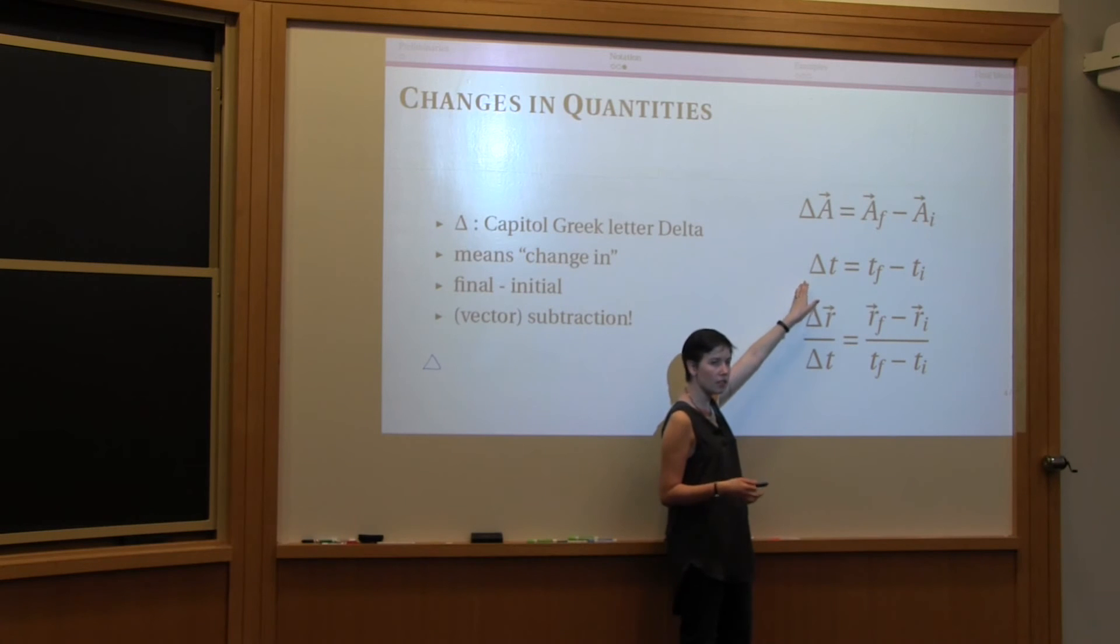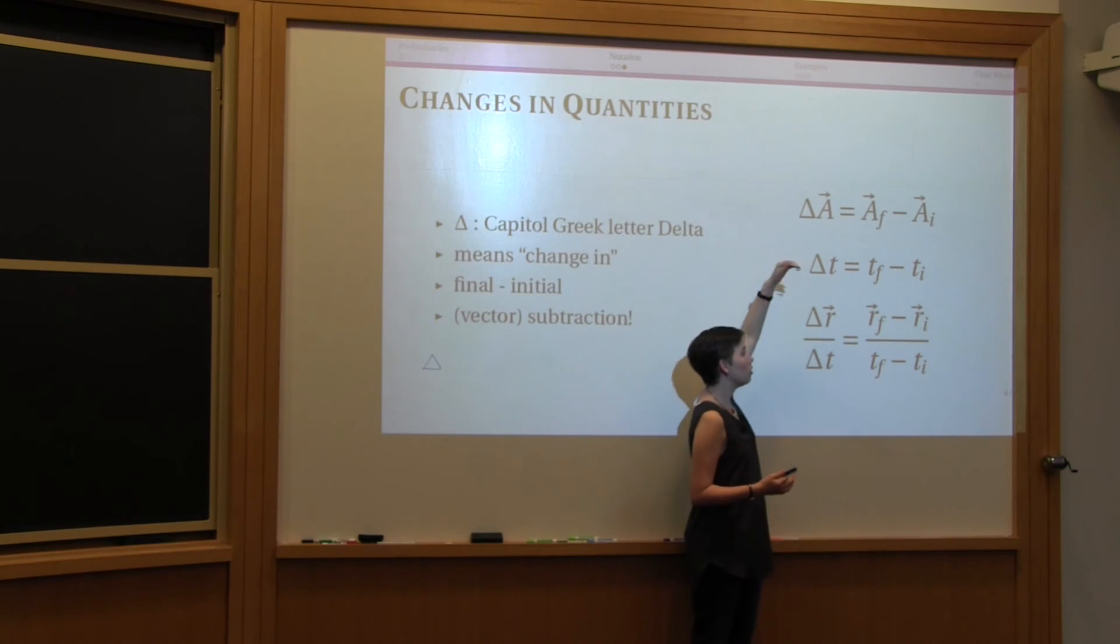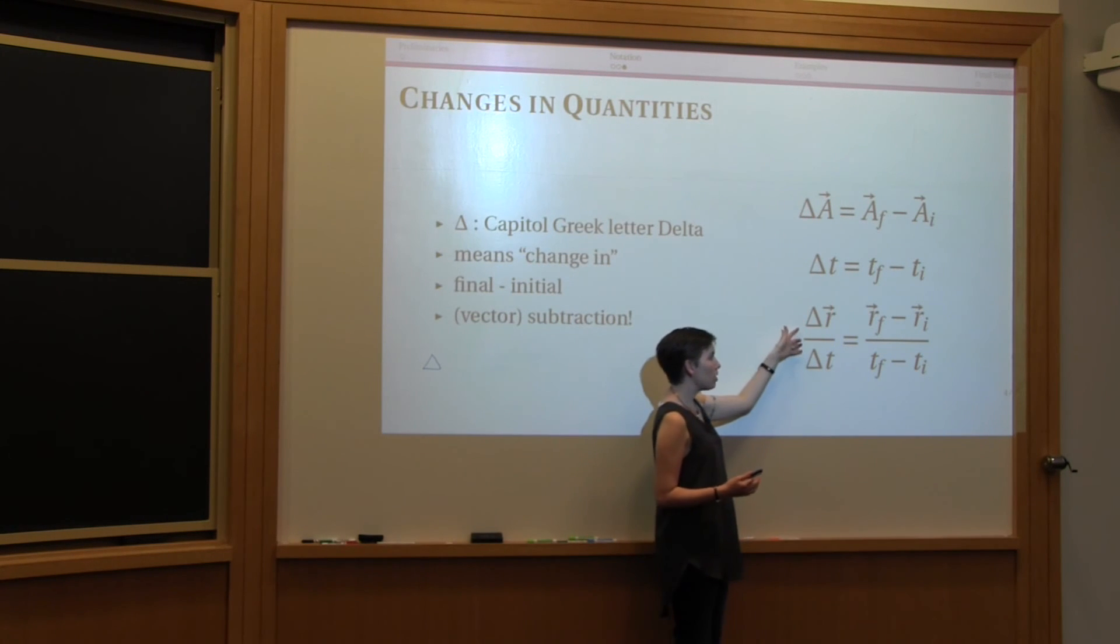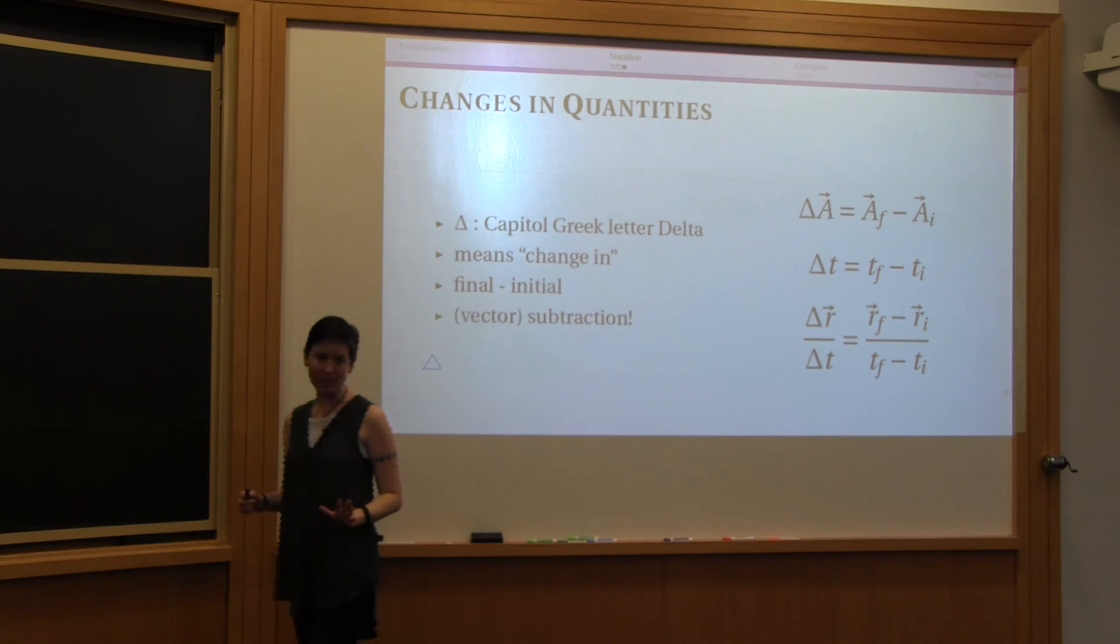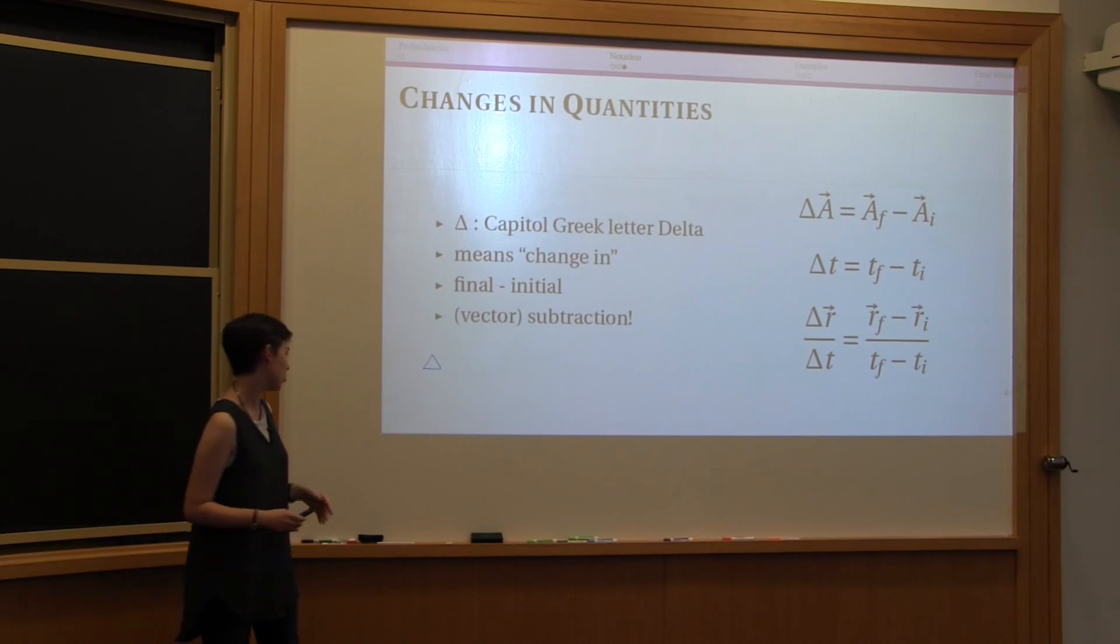Similarly for t, it's the final value of t minus the initial value for t. Note that it can refer to either a scalar or a vector. You can also see it appear in equations when there are multiple quantities changing at a time. Any time you see that triangle, it's the Greek letter delta, and it means final minus initial.